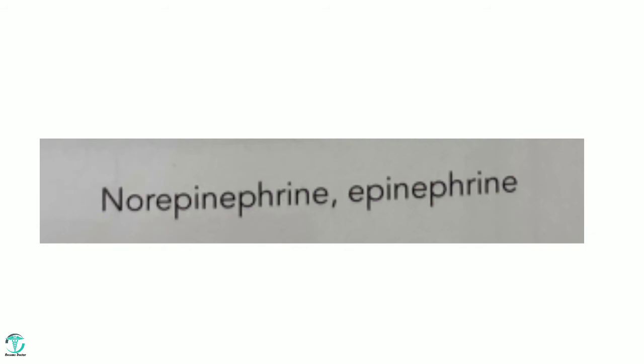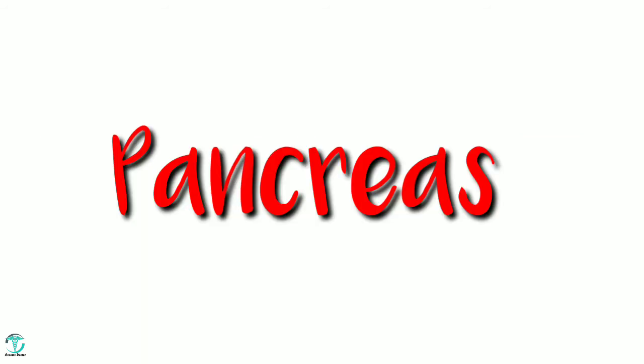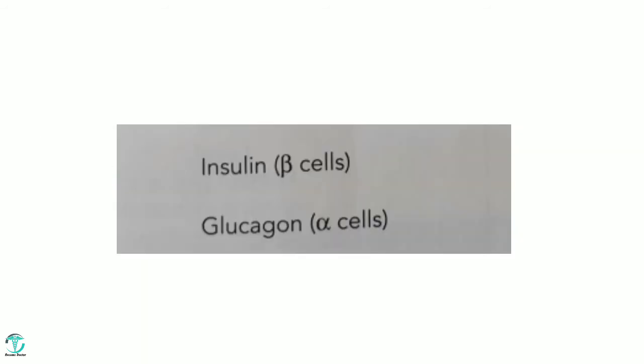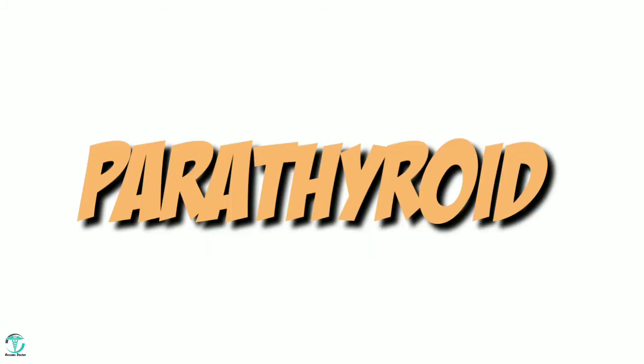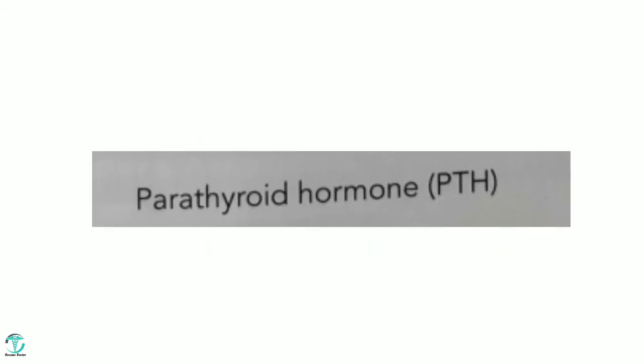The seventh gland is the pancreas. The pancreas consists of alpha cells and beta cells. Alpha cells secrete glucagon and beta cells secrete insulin — both are very important, as you know, for diabetes. The eighth gland is the parathyroid, which secretes parathyroid hormone, which is very important for the maintenance of calcium levels.